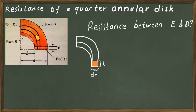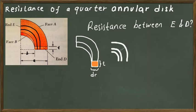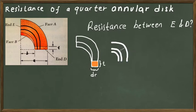We can think of this quarter disc as parallel-added quarter rings. The radii of these rings change from b to a. We add these rings of different radii in the radial direction, parallelly. We are interested in finding the resistance from one side to the other.